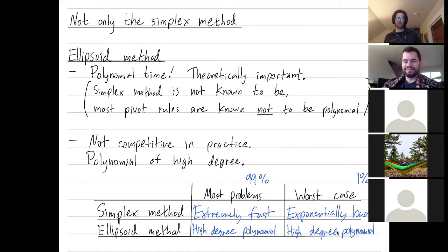On the easy problems as well. So simplex method is typically super good. The worst case, it's very bad, but the ellipsoid method in general, just overall, not great.